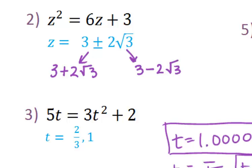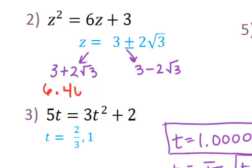To figure out what these are approximately, we just type them in our calculator — exactly what we see. Type 3 plus 2, then the square root button. On a TI-83 or 84, the square root button is above the x-squared button, so hit second and then x-squared. Type in 3, close the parentheses, and hit enter. You should get 6.46101615. The online homework typically asks you to round to four decimal places, so your answer is 6.4641. No rounding needed since our next digit is 0.